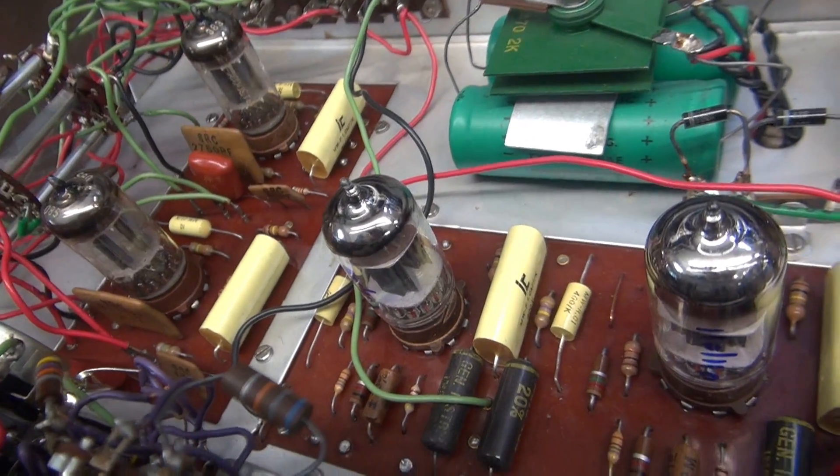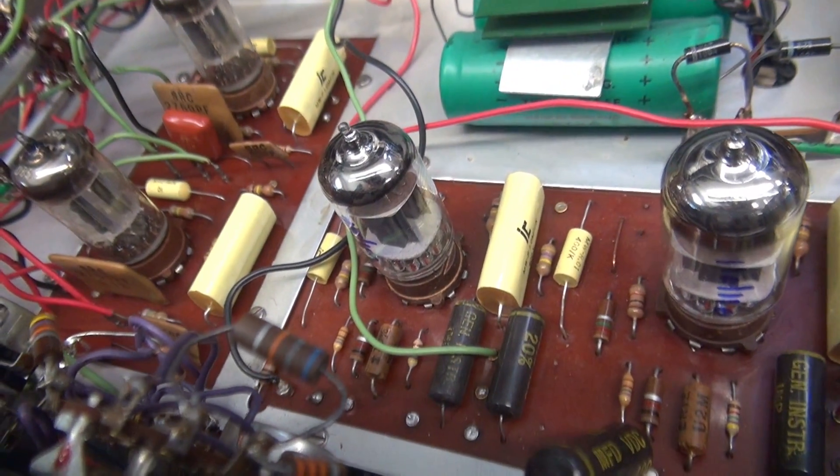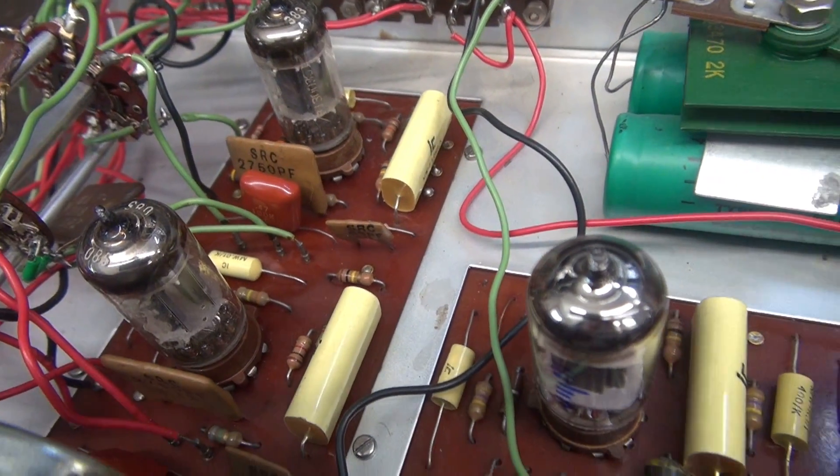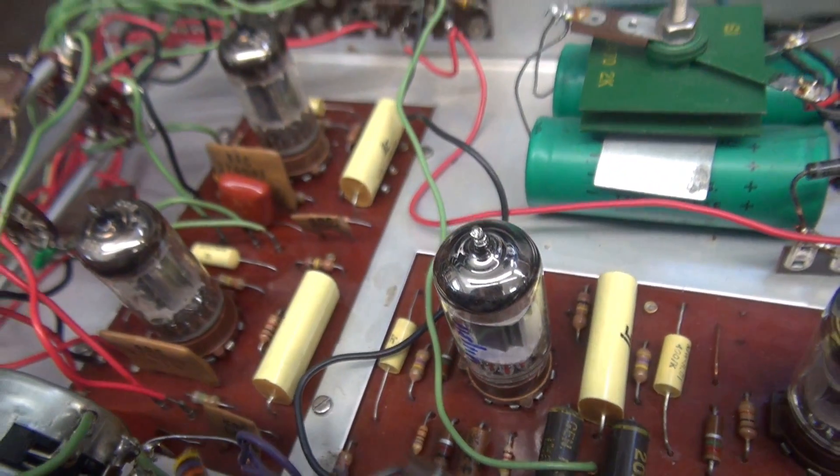Other than that, it looks like some of the caps have been changed on the circuit boards. Some of the resistors may have been changed, but most of those are the original carbon type that Dynaco used.